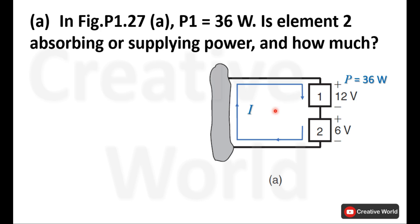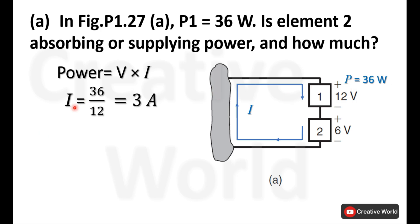Let's calculate the current through this loop. Using the basic power formula — voltage multiplied by current — we have voltage and power across element 1, so we can calculate current as power divided by voltage, which equals 3 amperes. This 3 amperes will also pass through element 2 in the same direction because of the series connection. Now we have current and voltage across element 2, so we can calculate its power.